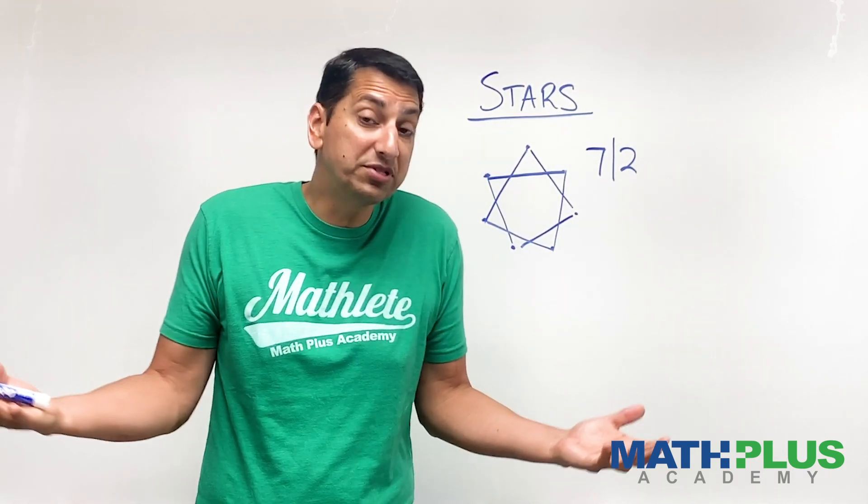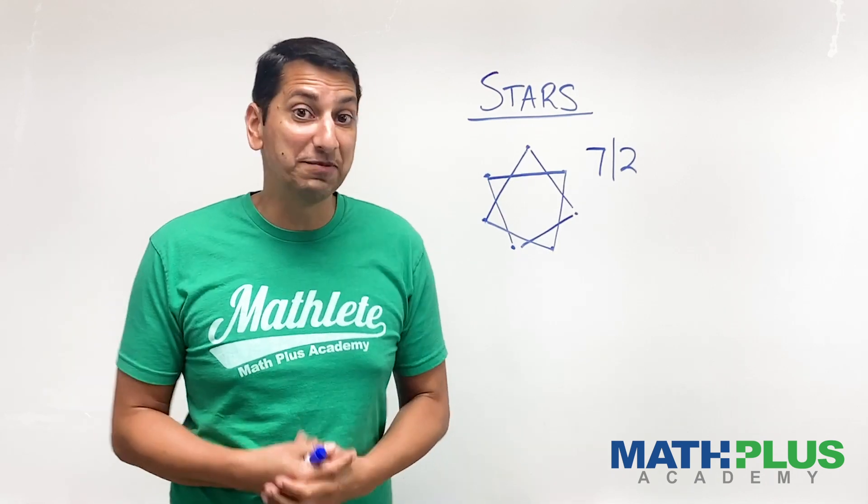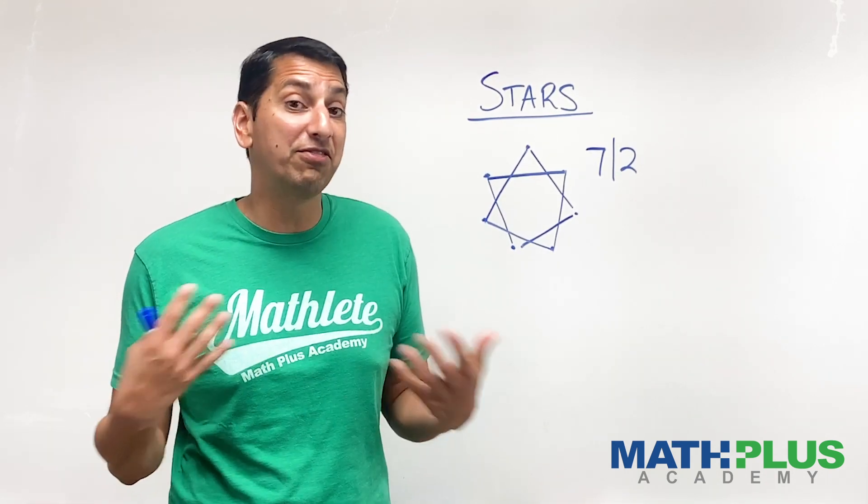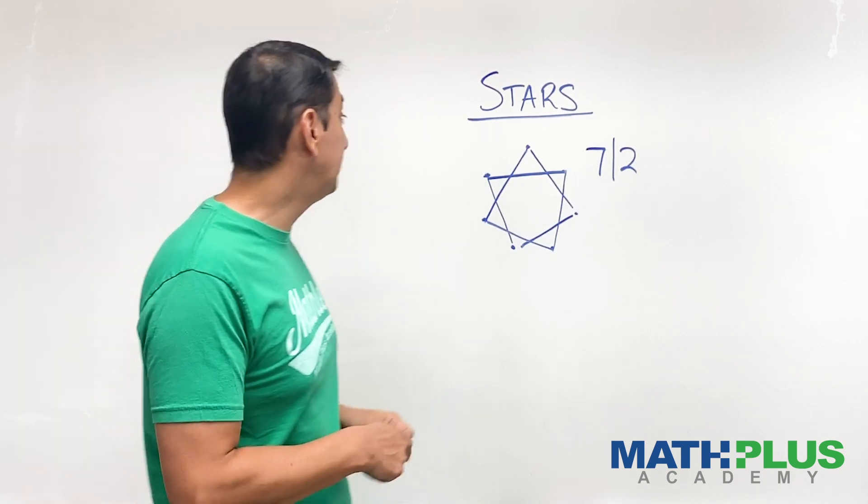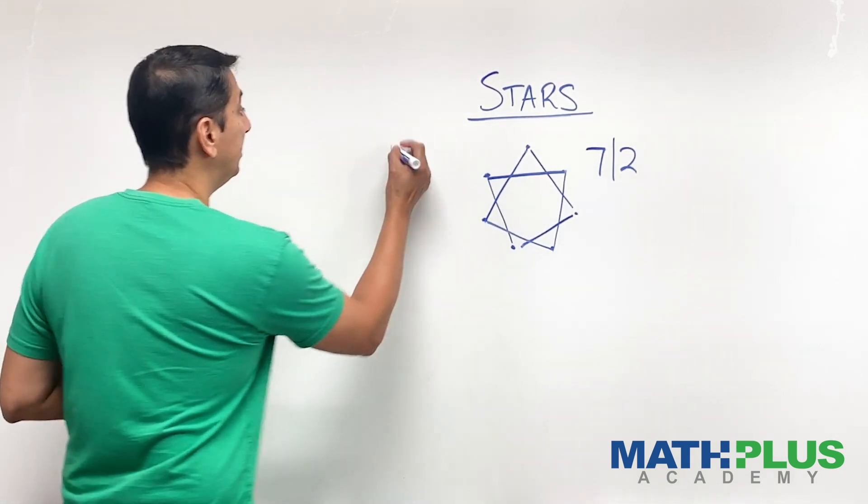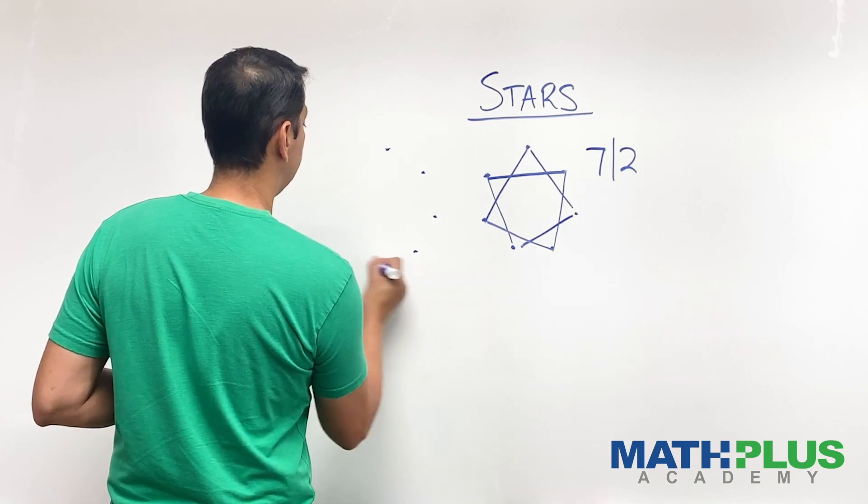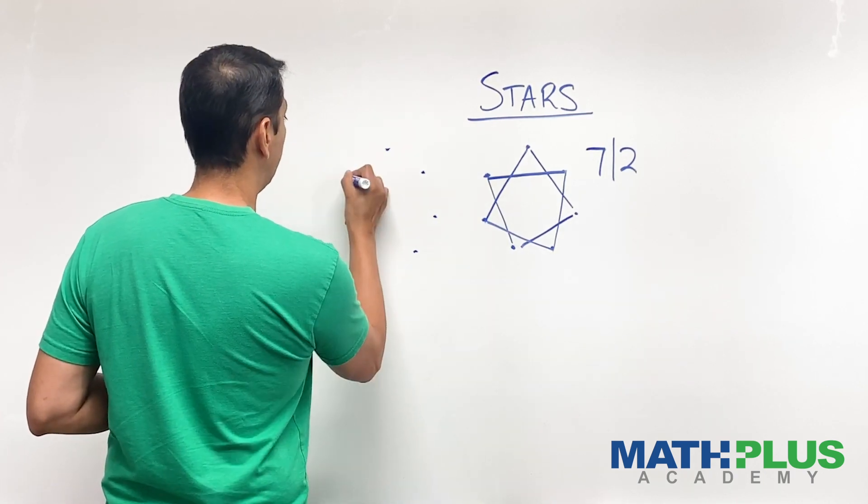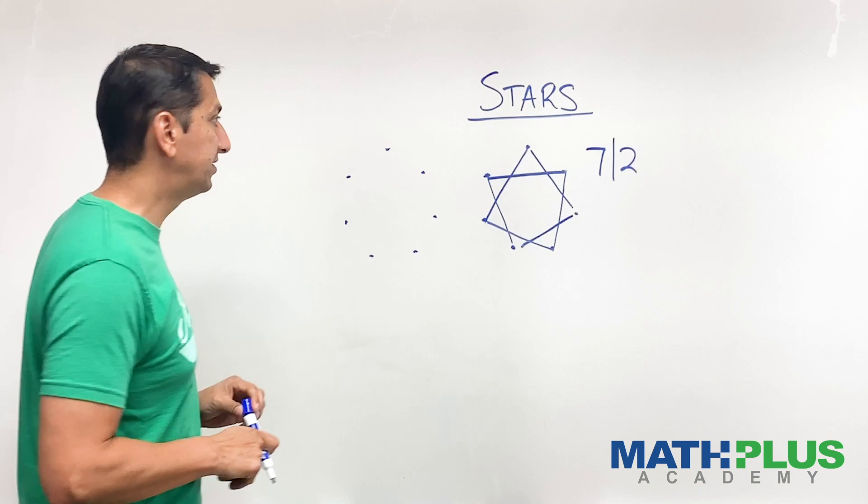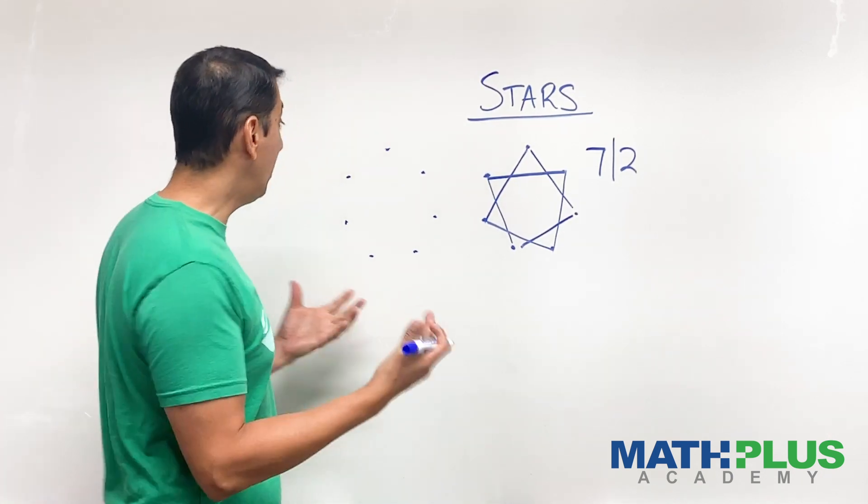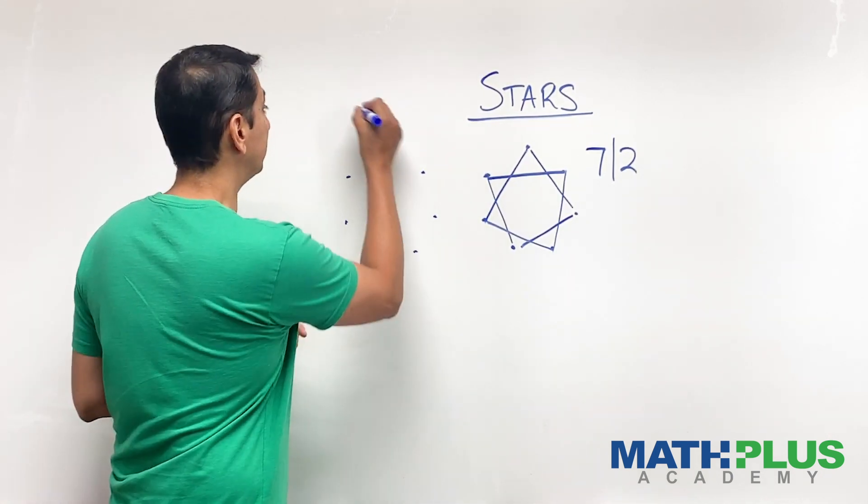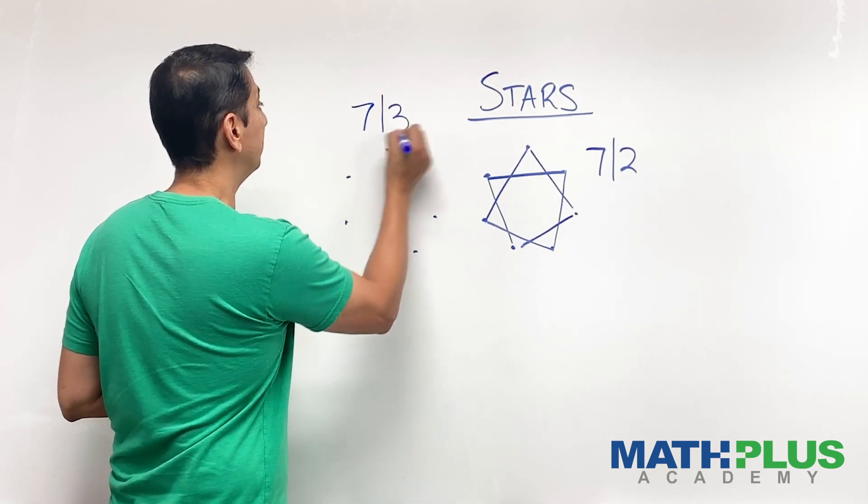Now, of course, as mathematicians, we're going to keep exploring. So we might then explore the seven three game. So let's try that. I'll make another one right here. Do my best to keep these fairly well and evenly spaced. There are seven more dots. And now we want to do a seven three. So this is going to be our seven three.